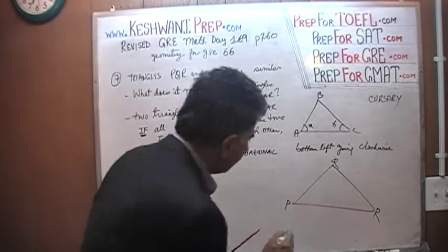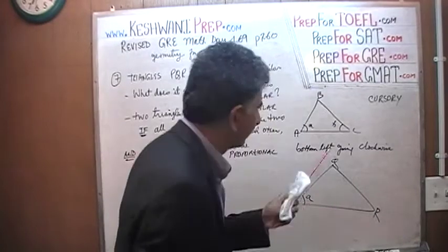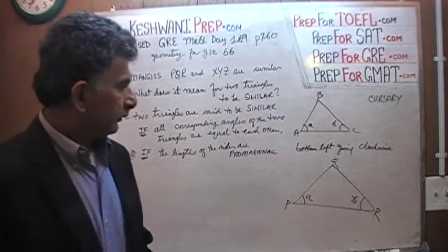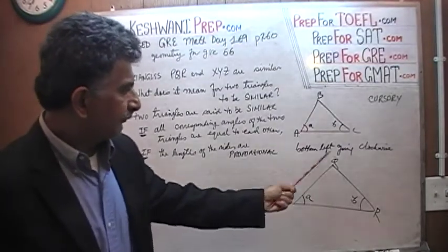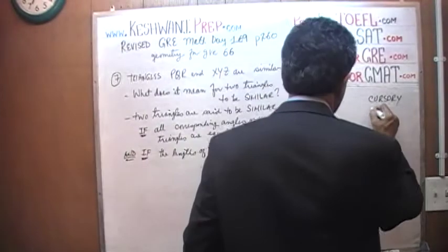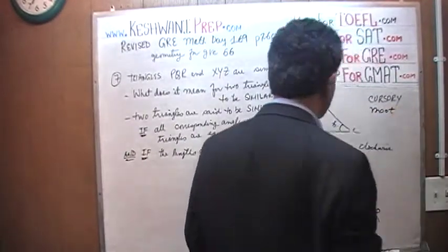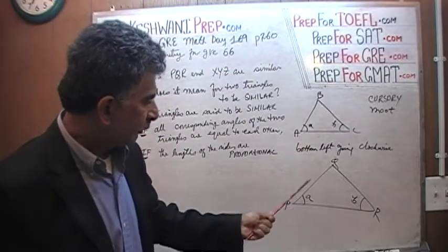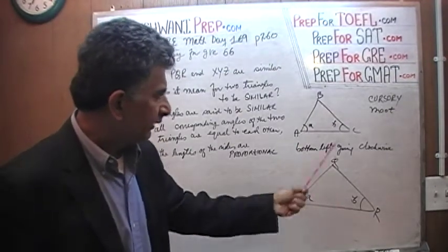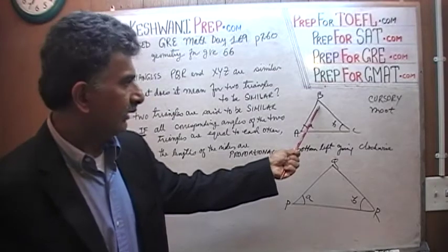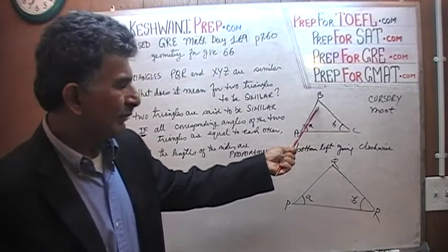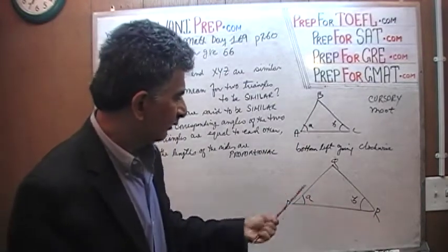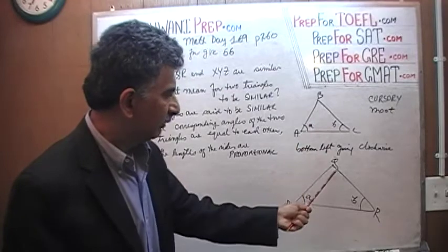If triangle ABC is similar to triangle PQR, and this is angle A, then this is the same exact degree. If this is angle B, the measurement of this angle is also the same. Why didn't I talk about the top angle? Because the top angle is a moot point. If this angle equals that angle and this angle equals this angle, then the top angle is simply 180 minus A minus B — which is exactly what the other triangle's top angle is as well.